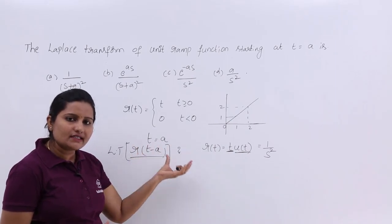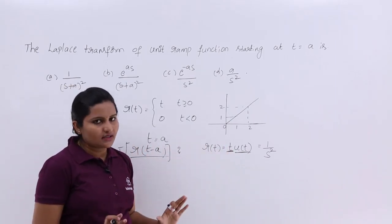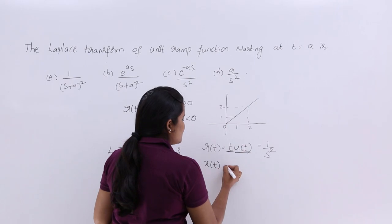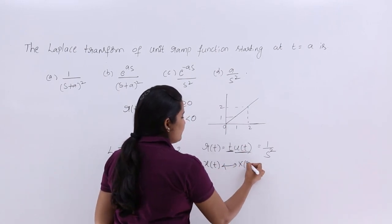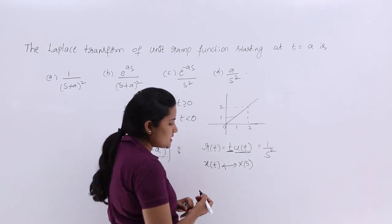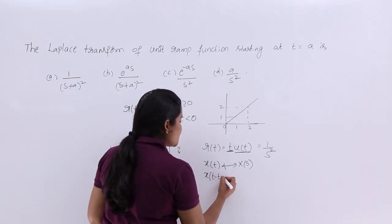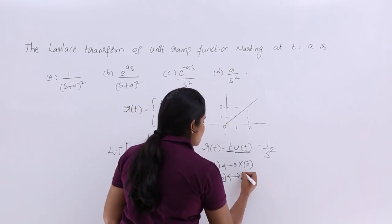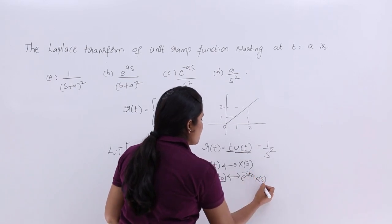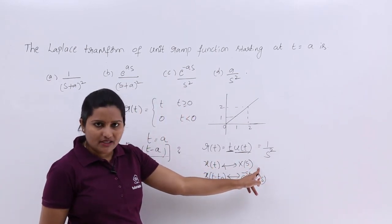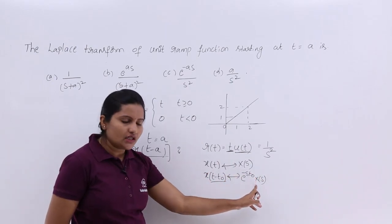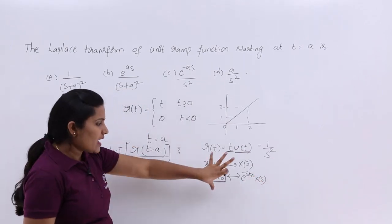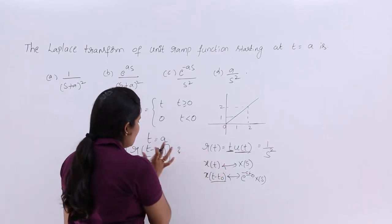They are asking the shifted signal transform, and we have the normal signal transform, so we apply the time shifting property. If you have any signal X(T) with Laplace transform X(S), then for the shifted version X(T minus T₀), the Laplace transform changes to e power minus S·T₀ times X(S). For this general signal, for the shifted version, you write the transform as e power minus S·T₀ into X(S).